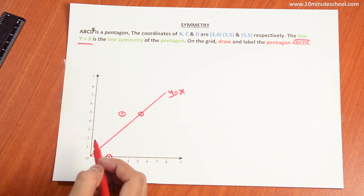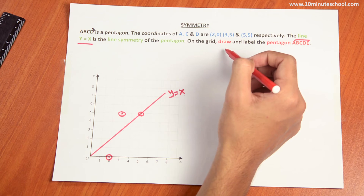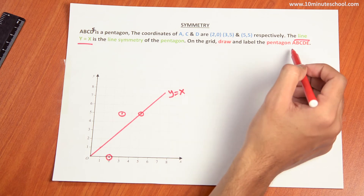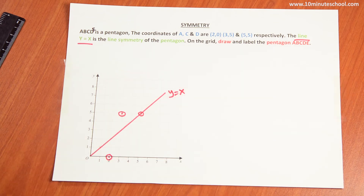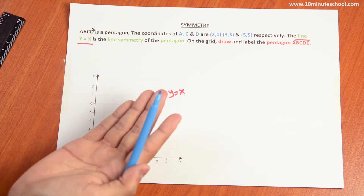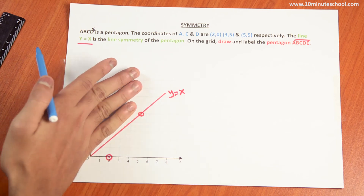The perfect overlap is shown on the grid. On the grid, draw and label the pentagon A, B, C, D, E.